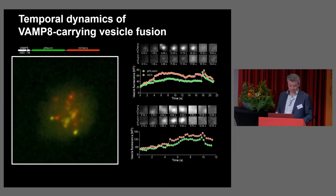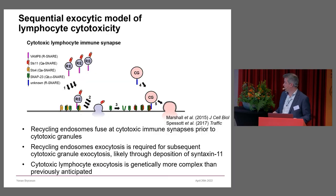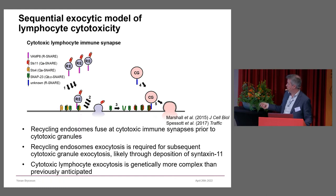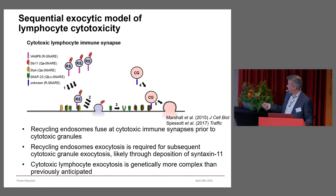These recycling endosomes are a prerequisite, among others carrying Syntaxin-11 — this SNARE on the plasma membrane that is required for subsequent cytotoxic granule release. With this work we defined a prerequisite: recycling endosomes fuse with the plasma membrane, bring in Syntaxin-11, and thereby form an acceptor SNARE complex for the cytotoxic granules.